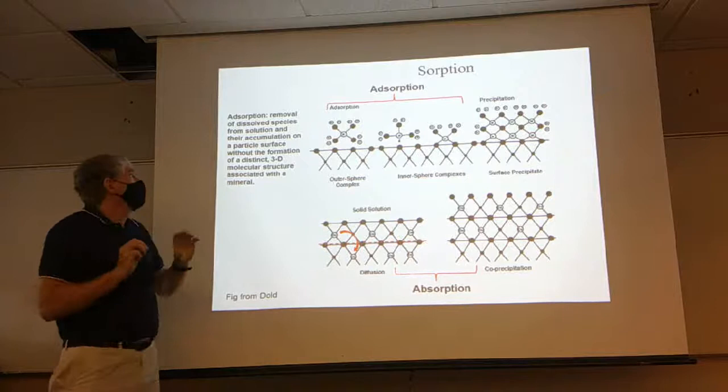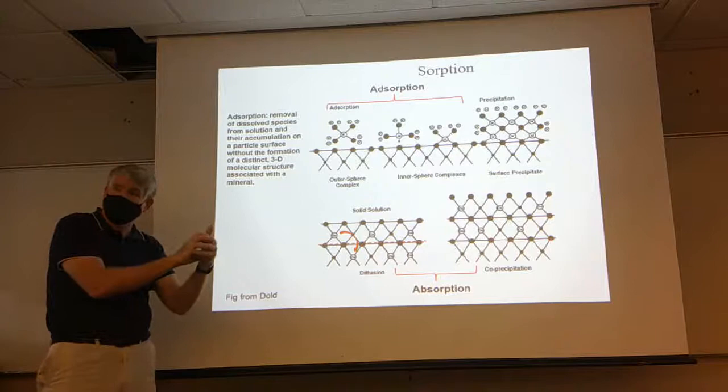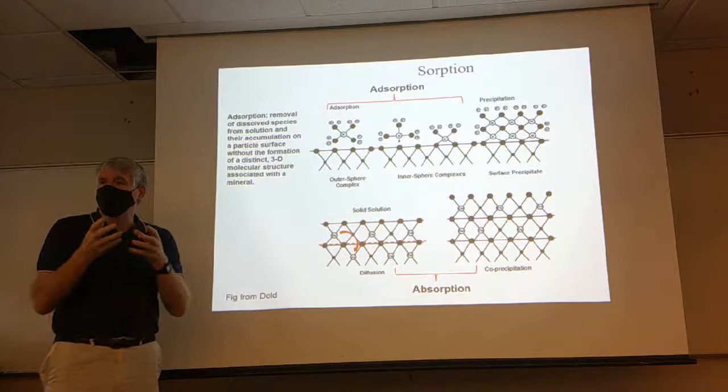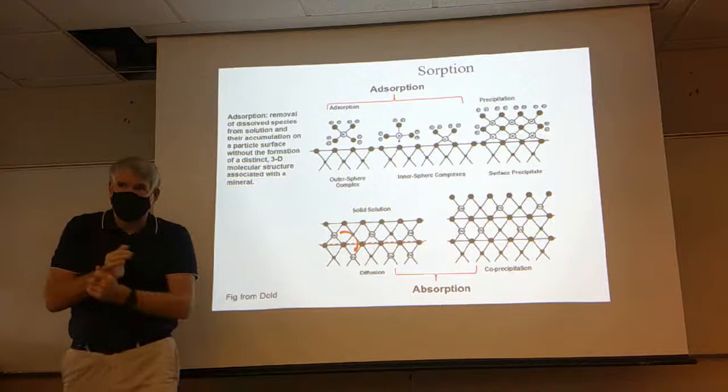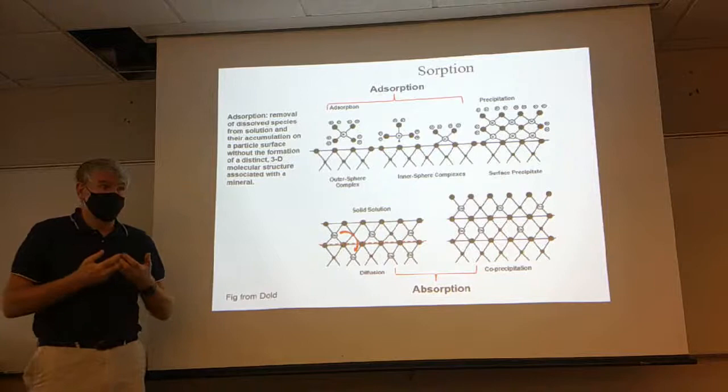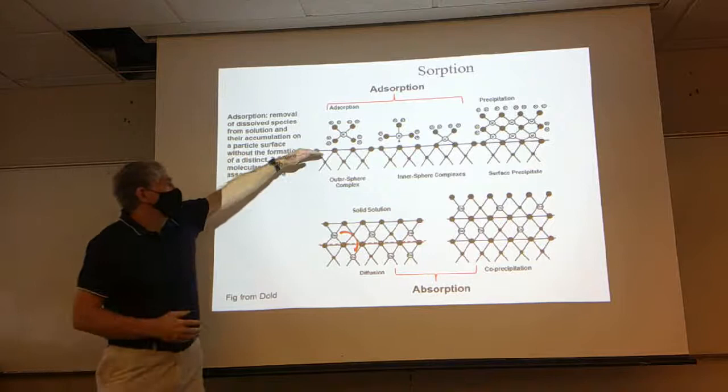Adsorption differs from precipitation because we're taking stuff out of solution and putting it onto the mineral grain, but it's not forming a distinct 3D pattern — it doesn't have the basic characteristics of a mineral itself. It doesn't have a distinctive structure. It's not like precipitation where we're actually forming a mineral with distinct composition and distinct structure.